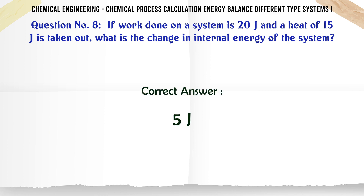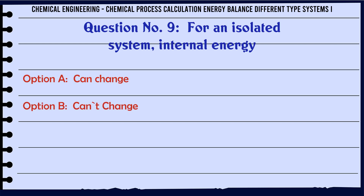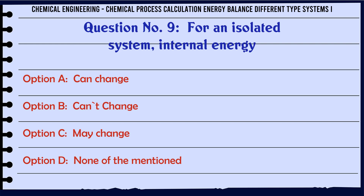For an isolated system, internal energy: A. Can change. B. Can't change. C. May change. D. None of the mentioned.